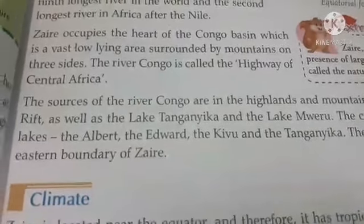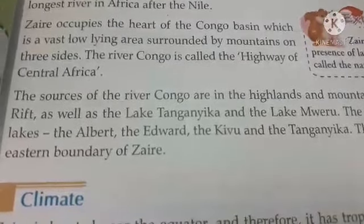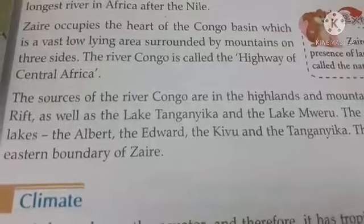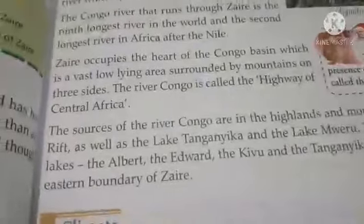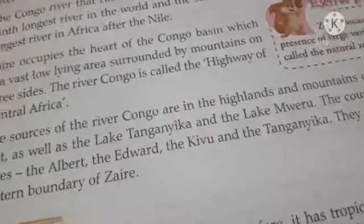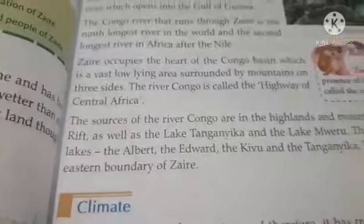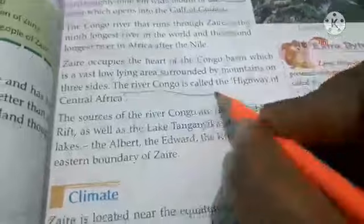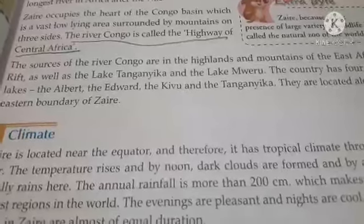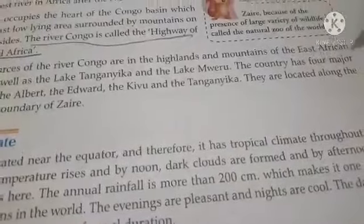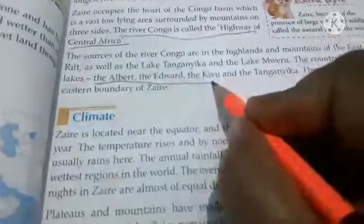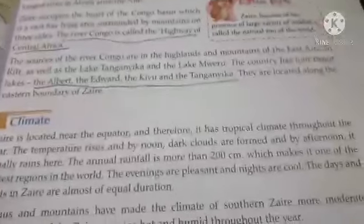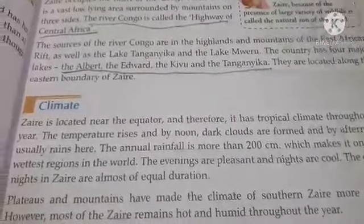The River Congo is called the highway of Central Africa — this is a very important line, underline it. The sources of River Congo are the highlands and mountains of the East African Rift, as well as Lake Tanganyika and Lake Meru. The country has four major lakes: Albert, Edward, Kivu, and Tanganyika, which are located along the eastern boundary of Zaire.